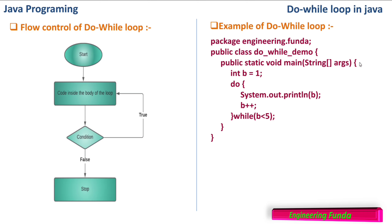Let us look at an example of the do-while loop. Here in the public static void main, we have initialized the value of b as one. Then do: System.out.println(b) — it will print one, then b++ makes b equal to two. It checks the condition: b is less than five, that is two is less than five — yes, so it will again go and print the value of b, printing two.